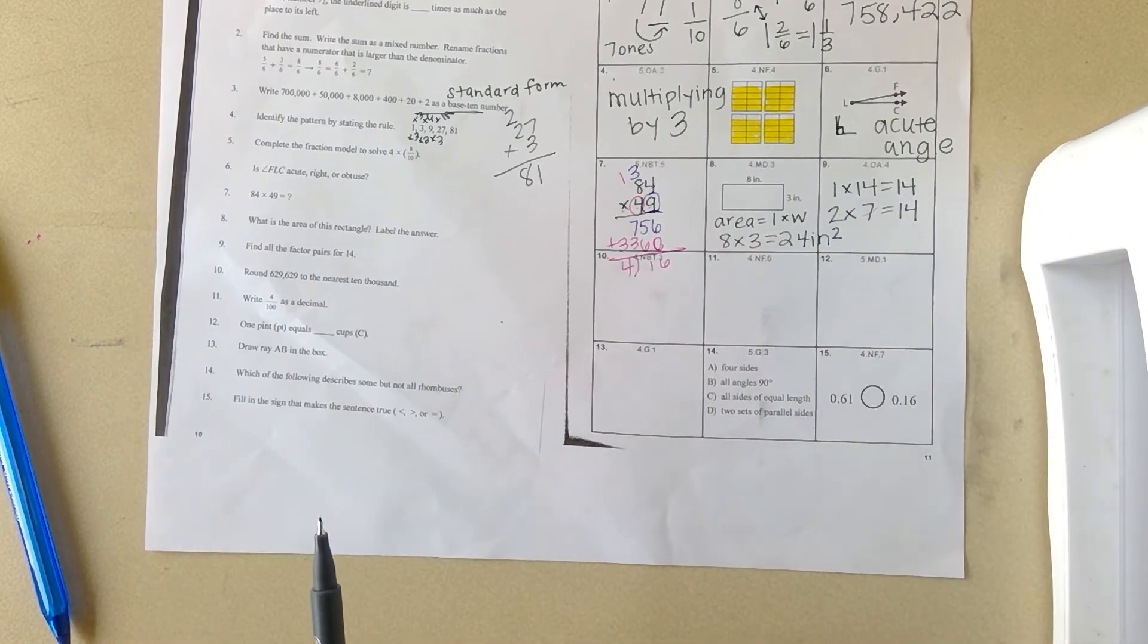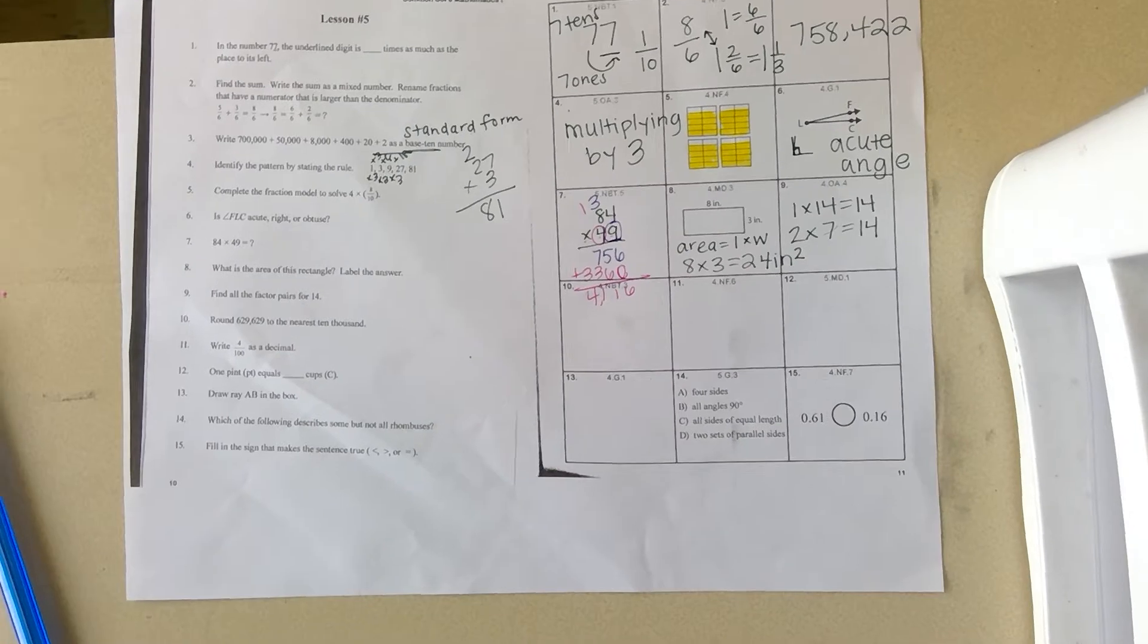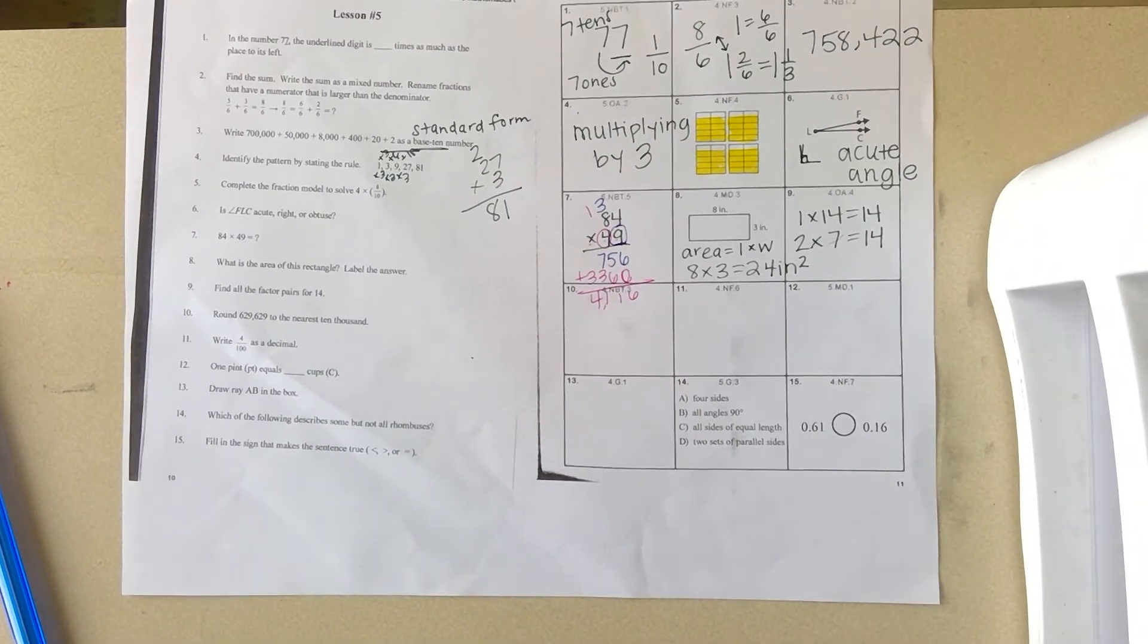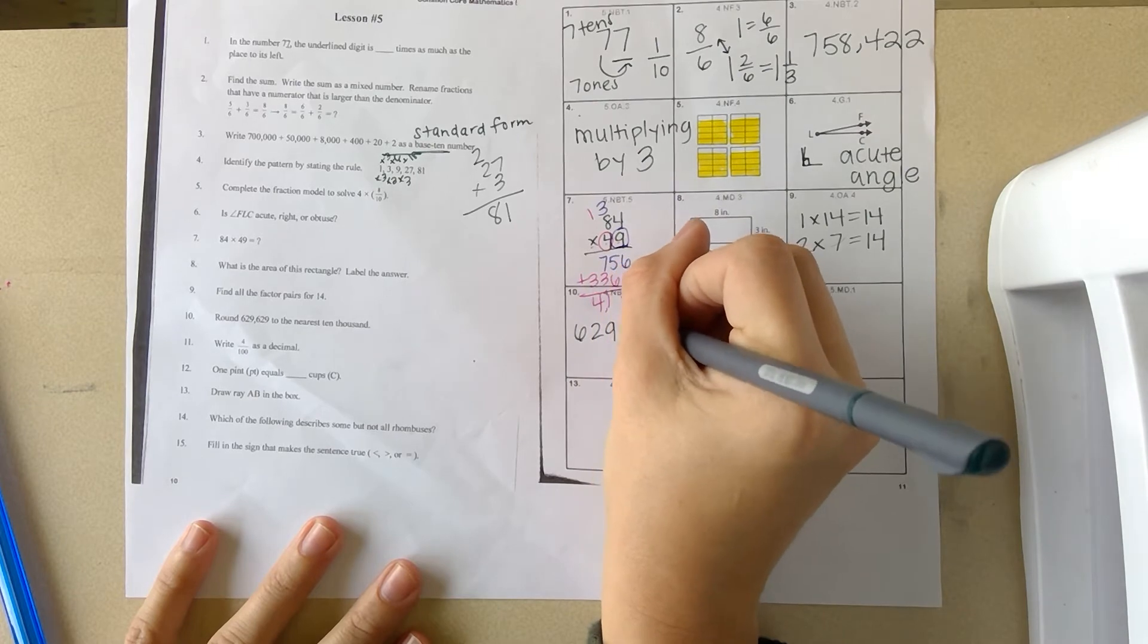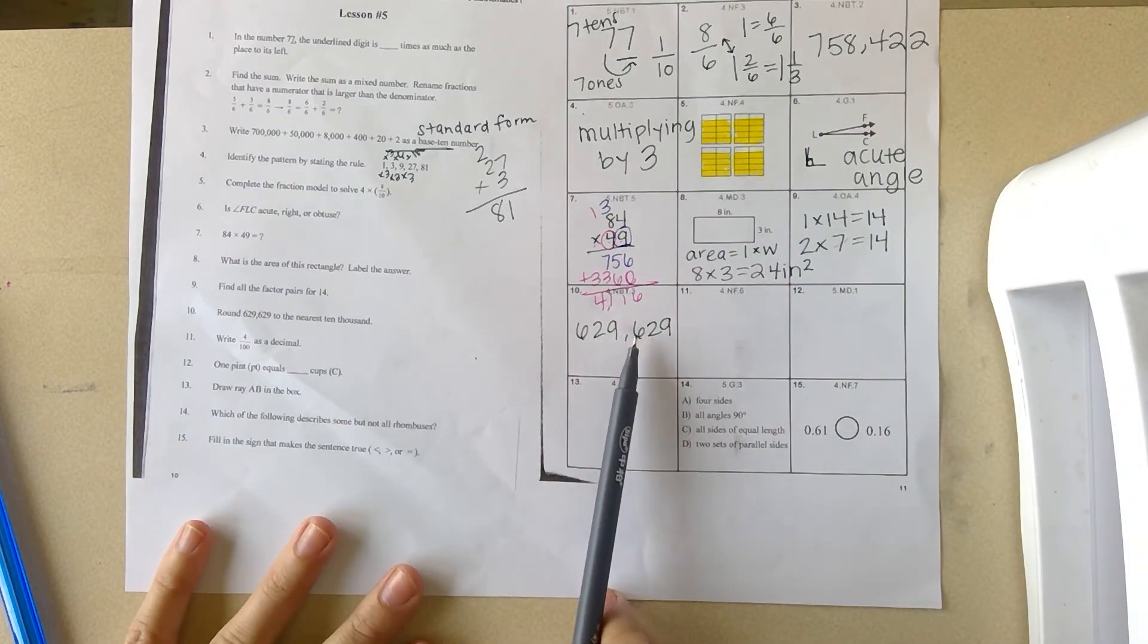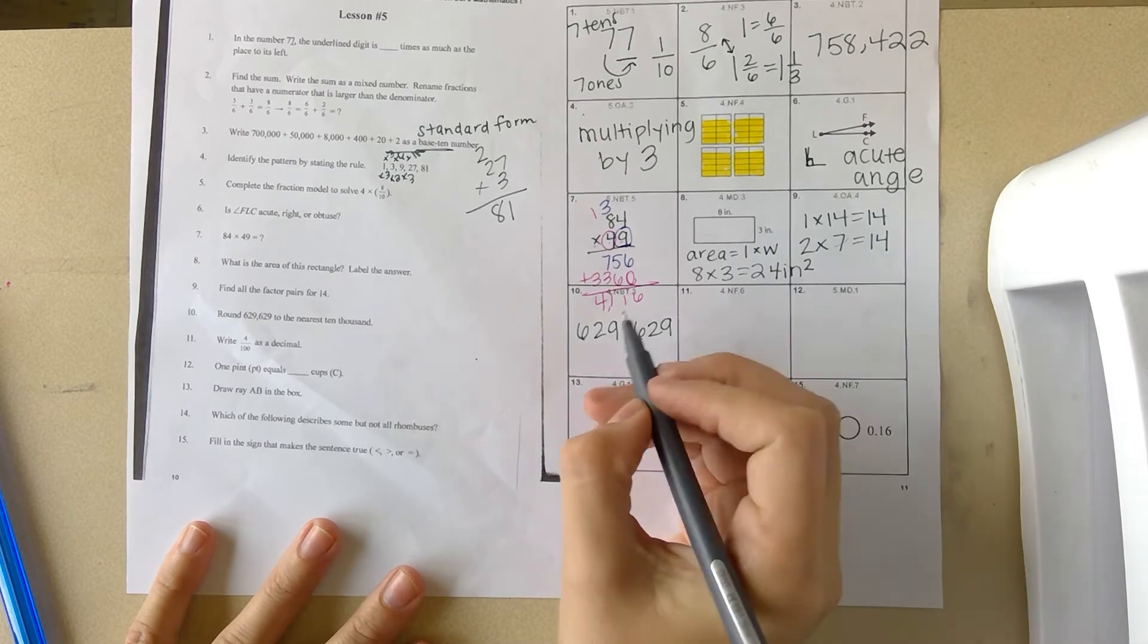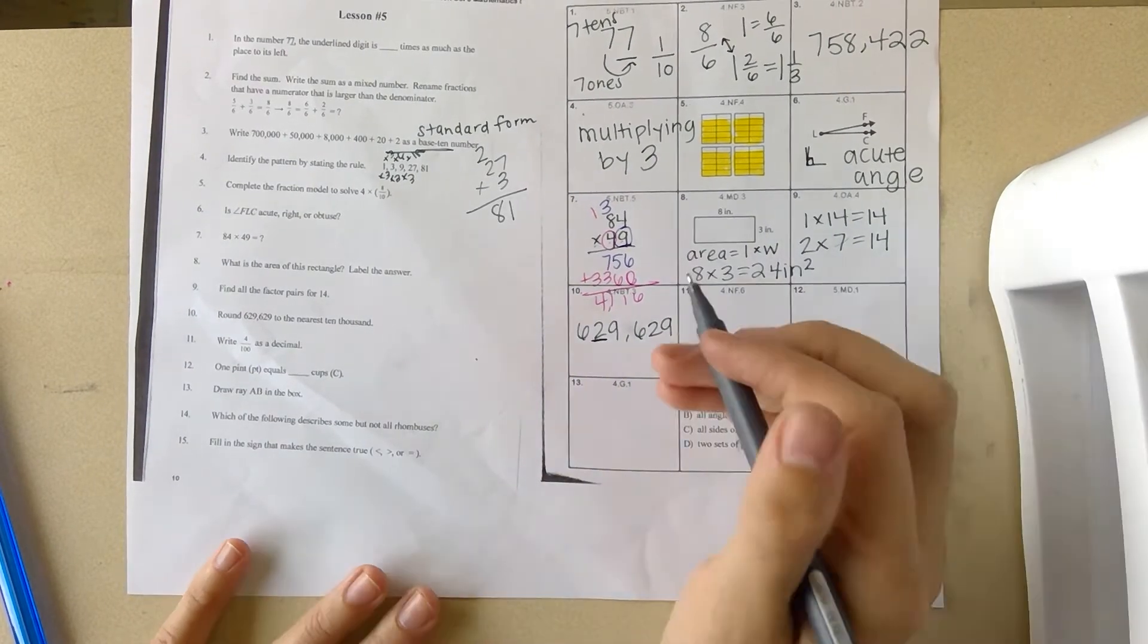Number ten: round 629,629 to the nearest 10,000. I'm going to rewrite that number: 629,629 to the nearest 10,000. This is ones, tens, hundreds, thousands, ten thousands. I am rounding to that digit, that place value.